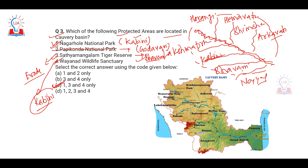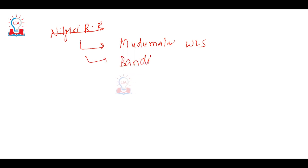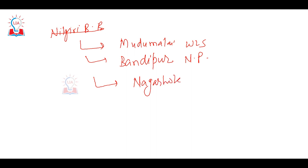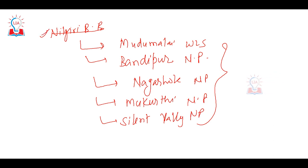The Nilgiri Biosphere Reserve covers the entire Cauvery basin area and includes Anamalai Hills, Mudumalai Wildlife Sanctuary, Bandipur National Park in Karnataka, Nagarhole National Park, Mukurthi National Park, and Silent Valley National Park. Almost the entire Wayanad district is also drained by the Cauvery River. These are the protected areas within the Nilgiri Biosphere Reserve that fall under the Cauvery basin — important for UPSC Prelims 2023.